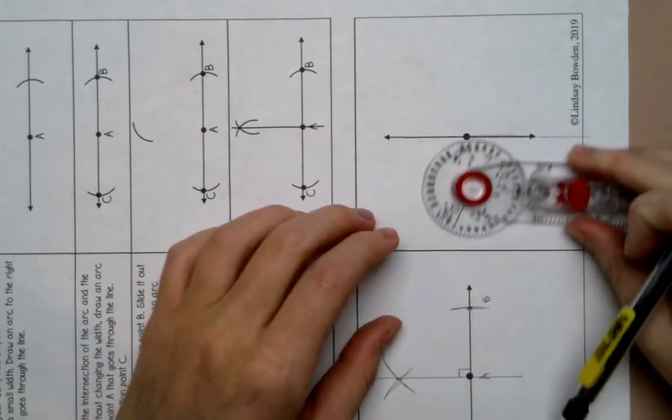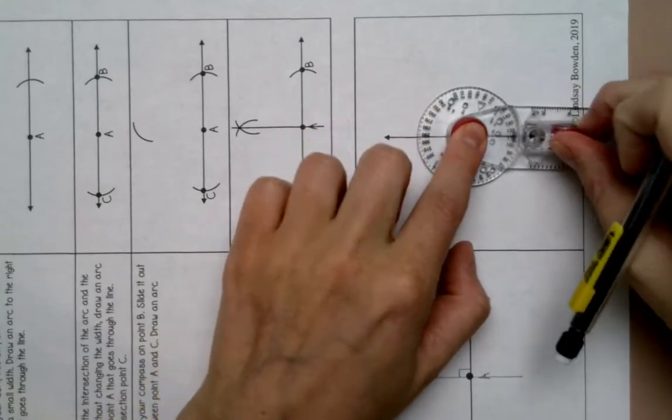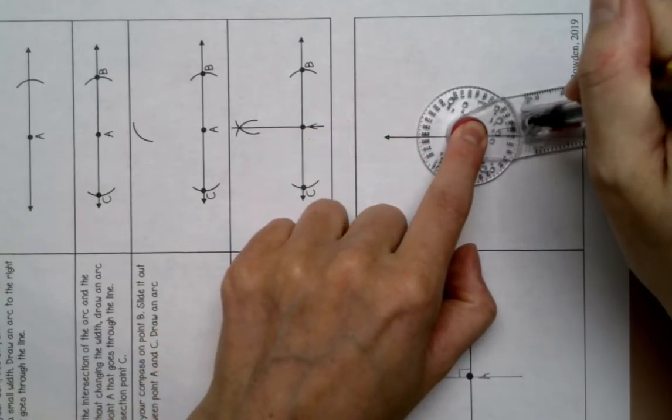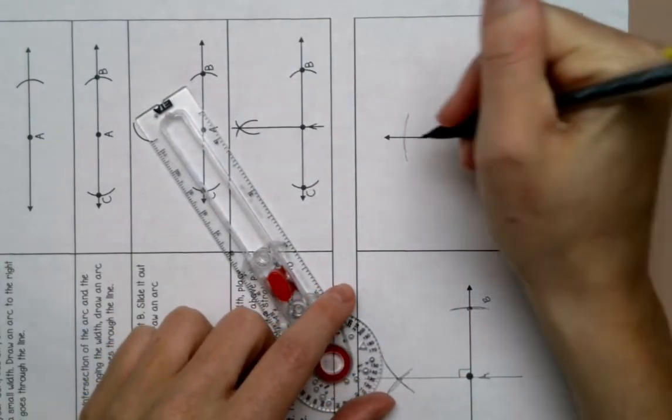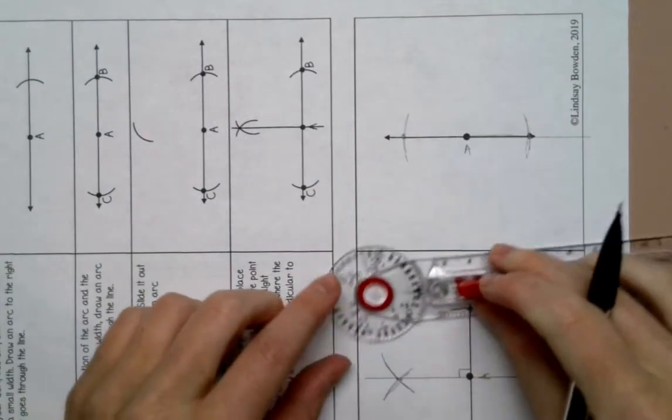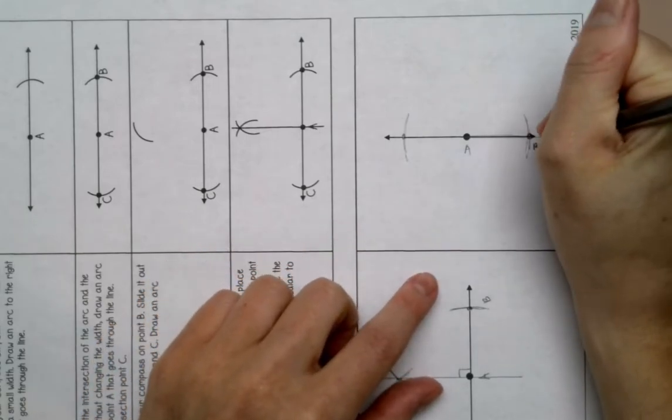So I'm going to put my compass on point A and I'm going to draw an arc on this side and on this side. And then I'm going to label this B and this C.